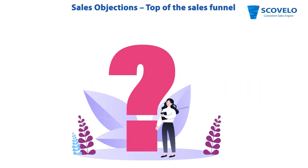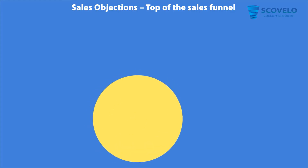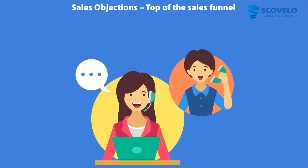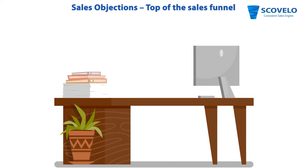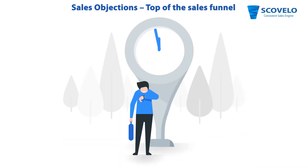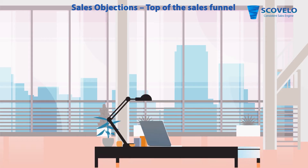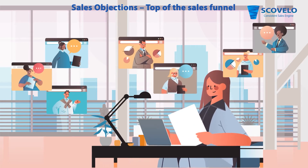Your buyer is already solving the problem with some solution. This could be one solution that will meet only the basic needs, and your solution could be 10 times better. However, your buyer has searched enough for solutions and has made a decision to go with that solution for some reason. Now when you go out sounding like just another salesperson, the buyer obviously would not want to waste their time with you. So you will have to be very persistent and contextual to the buyers at this stage.